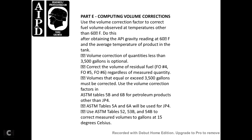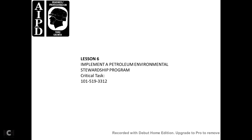For petroleum products other than JP4, use ASTM tables 5A and 6A. For JP4, use UASAM tables 52, 53B, and 54B. The corrected measured volumes of gasoline are at 15 degrees Celsius.